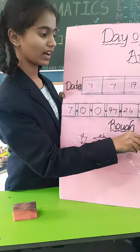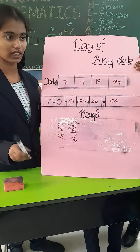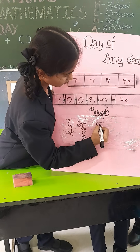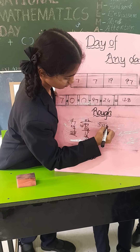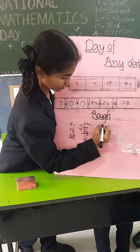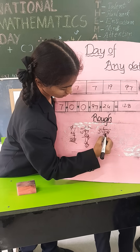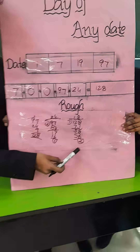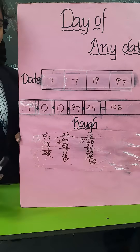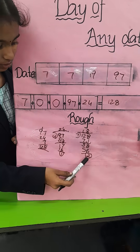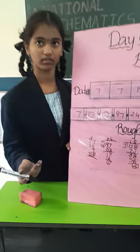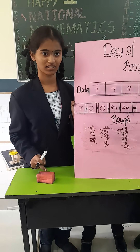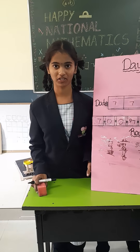We have to divide the total by 7, because a week has 7 days. We got the remainder code — every day has a code. The remainder is 2, and 2 means Monday. So the answer is Monday. Is it right, Sir? Correct. Thank you for giving this opportunity.